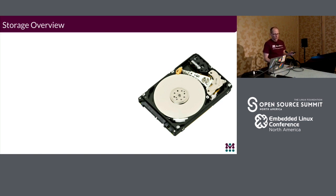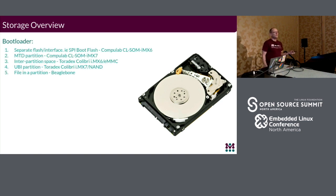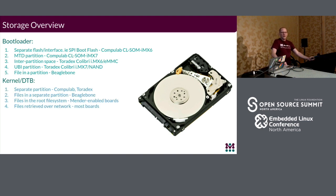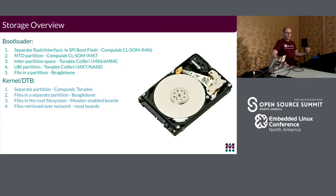Looking at the storage overview specifically for the bootloader: you see five options listed here, which are the most common. The kernel and device tree can be very similar. Some systems put the kernel in a separate partition; some put it as a file in the root file system partition. For Mender specifically, one of the first things we do when integrating Mender is move the kernel — if it's in a separate partition — so that it's actually a file in the root file system, which gives us the ability to update the kernel over the air as part of our standard file system update.